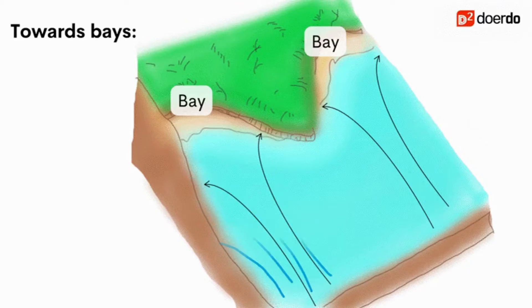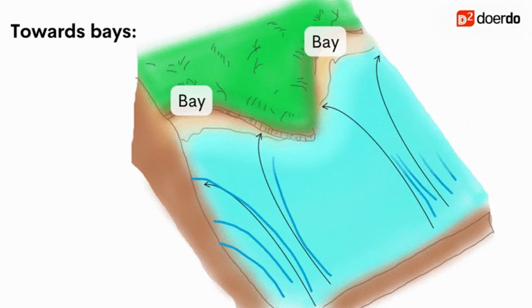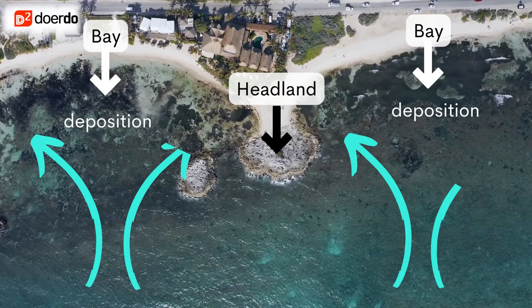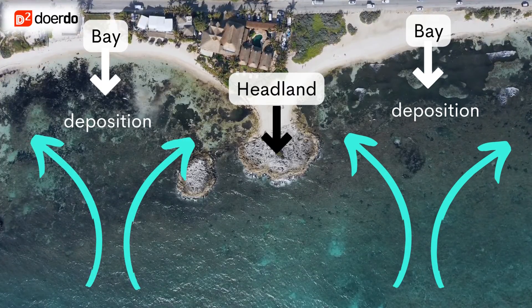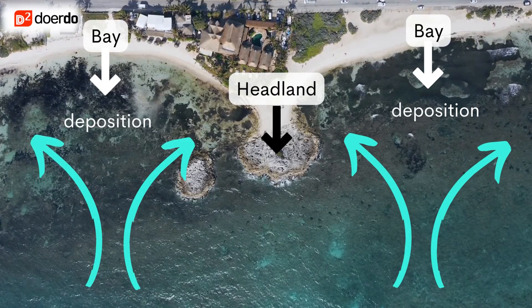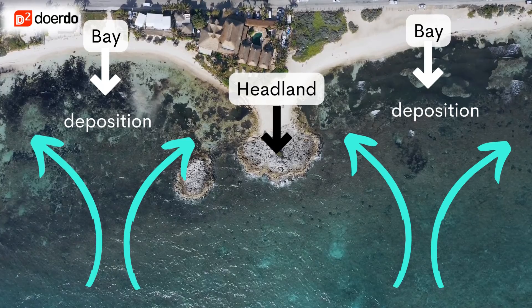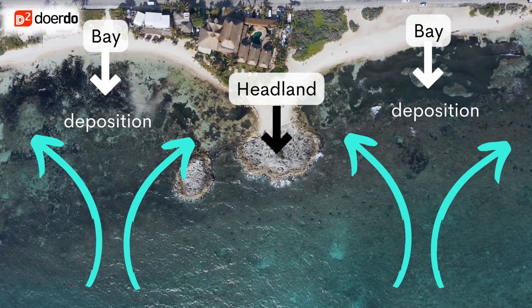However, the energy of the waves spreads out or diverges in the bay area where the water is deeper. So the energy is dissipated. Here we can see shorter waves, less erosion, and more deposition.